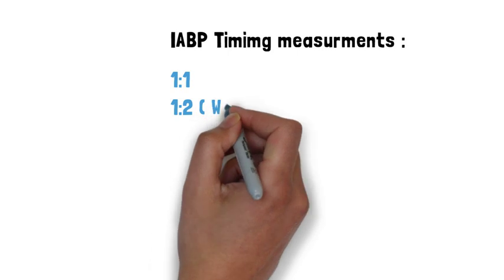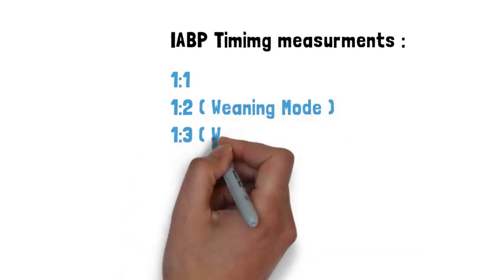Counter pulsation timing is usually measured by a 1-to-1, 1-to-2, or 1-to-3 ratio.